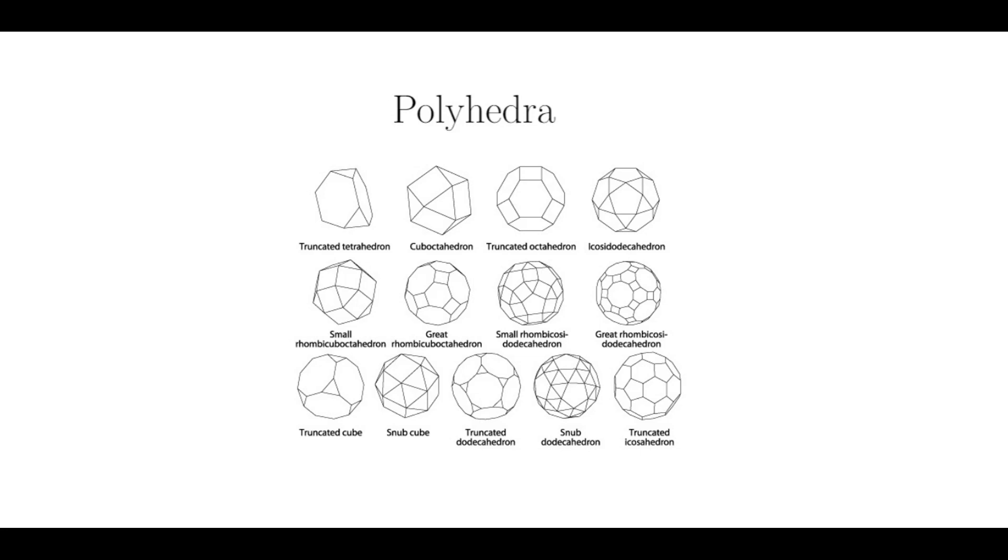In two dimensions we had polygons, but in three dimensions the shapes we will be studying are called polyhedra. And specifically, we want to look at all polyhedra that are convex and regular. Convex meaning that if I connect any two points within the shape by a line segment, that line segment also lies within the shape. This is going to exclude star-type shapes.